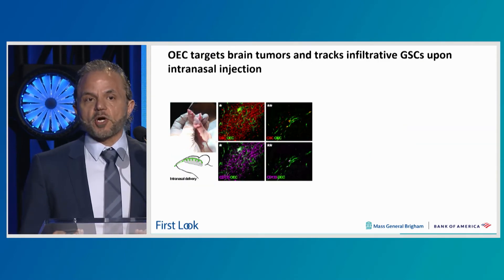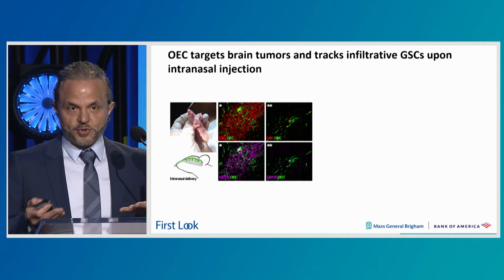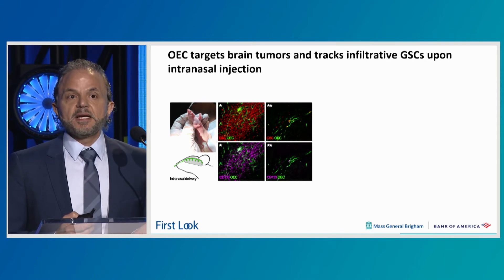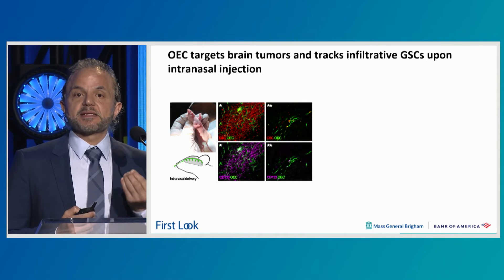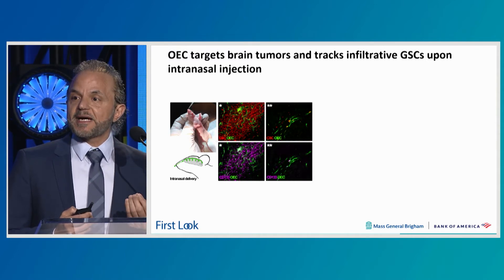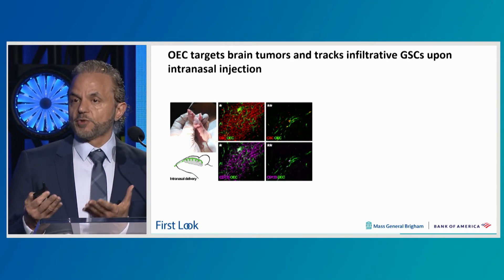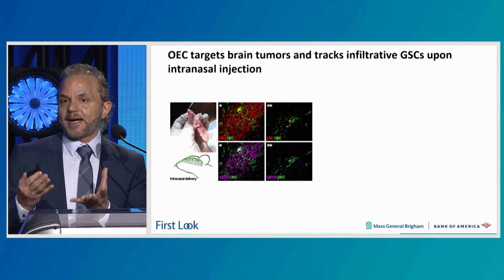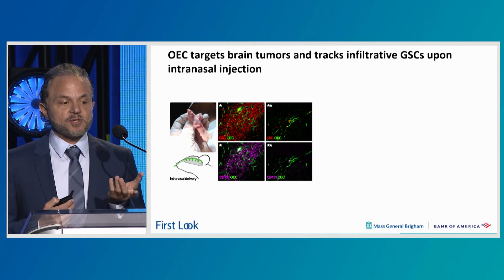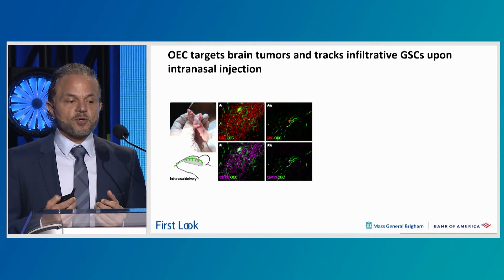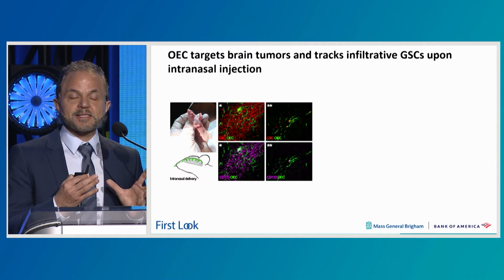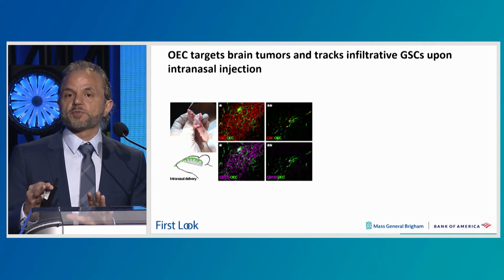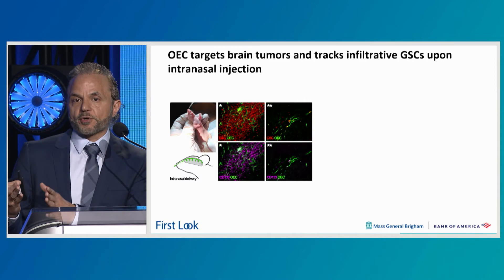So great, you have a therapy that works in culture — what happens when you put them in the brain? That's more important. We translated it to an in vivo setting using patient-derived xenograft models; the tumor cells are in red. We decided to implant these cells into the nasal cavity because this is their natural route to the brain. We thought to use their natural route to get to the brain, and indeed you see that these OECs, shown in green, not only go to the primary bulk of the tumor, but most importantly they track the infiltrative glioma stem cells, which are responsible for tumor growth and eventually recurrence and patient death.